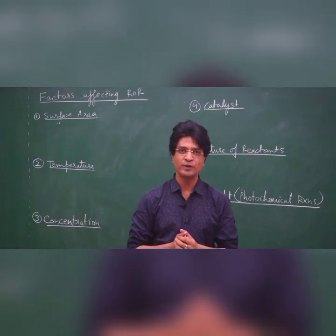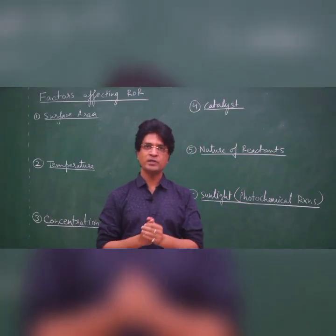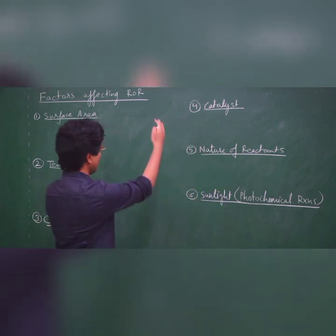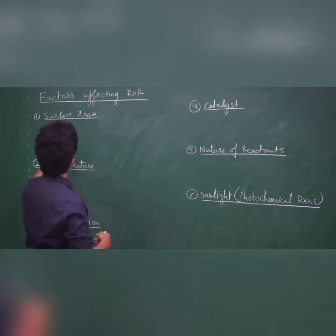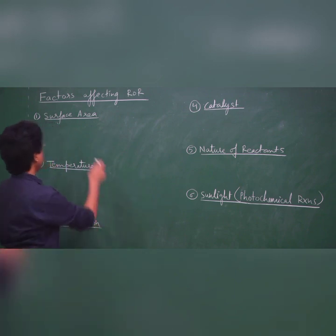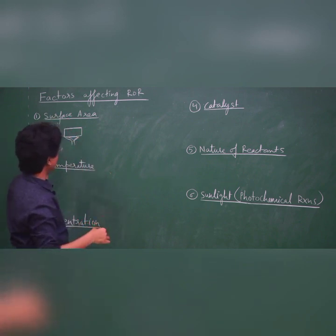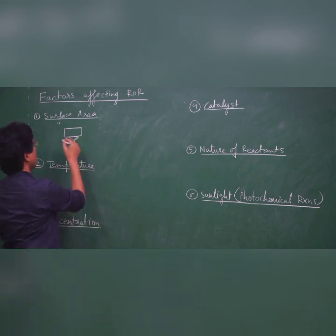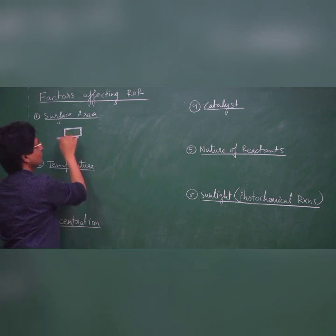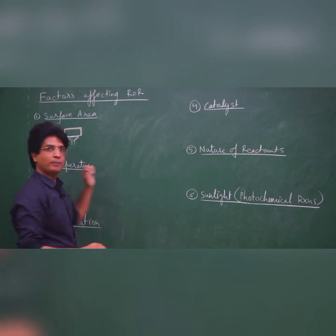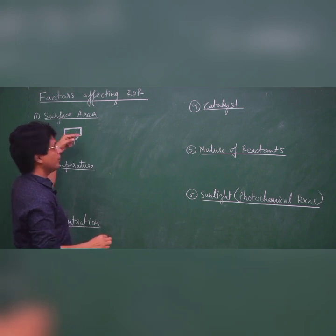After doing questions on rate of reaction, let us now discuss the next topic: factors affecting rate of reaction. There are many factors; we will discuss six of them. The first is surface area. If I take a solid cube and burn it, the particles on the surface get the first chance to react, while inner particles must wait. If I break the solid into small particles or powder, the effective surface area increases and all particles have an equal chance to react.